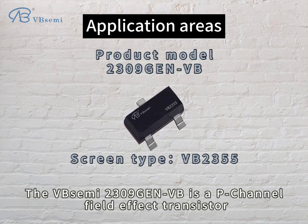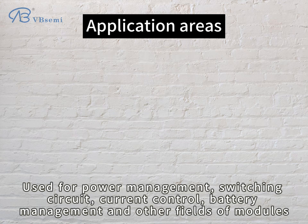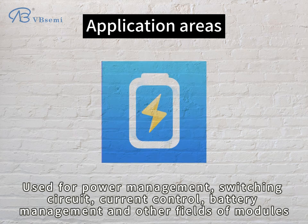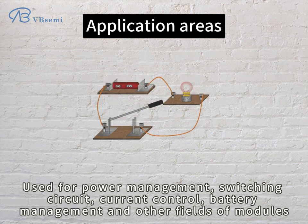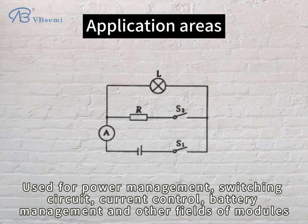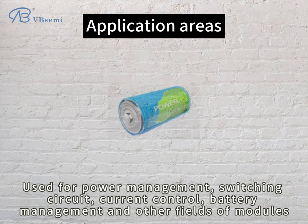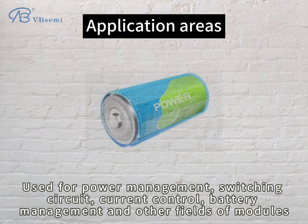The VB Semi R309 GenVB is a P-Channel Field Effect Transistor, used for power management, switching circuits, current control, battery management, and other field modules.